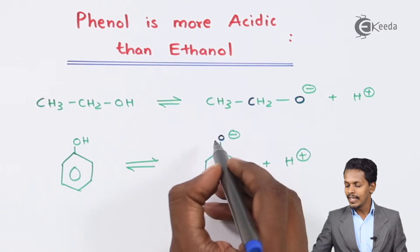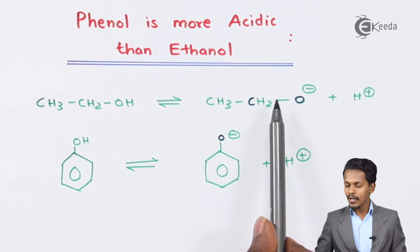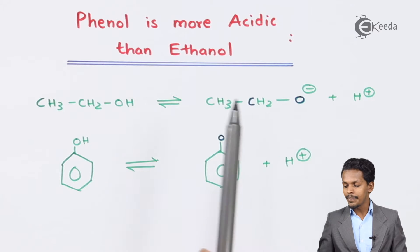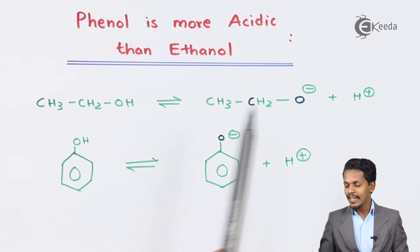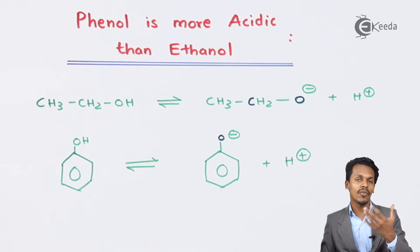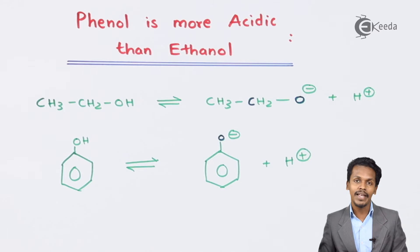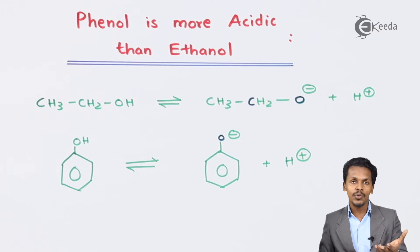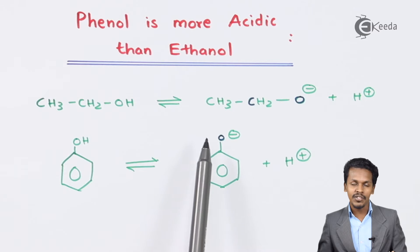In Phenoxide ion, the oxygen atom is attached to a carbon atom which is SP2 hybridized. Comparing the two, the CH3CH2 group are alkyl groups, and alkyl groups have a positive inductive effect. So they increase the electron density on the oxygen atom. In contrast, the SP2 hybridized carbon is more electronegative, so it decreases the electron density on the oxygen atom.